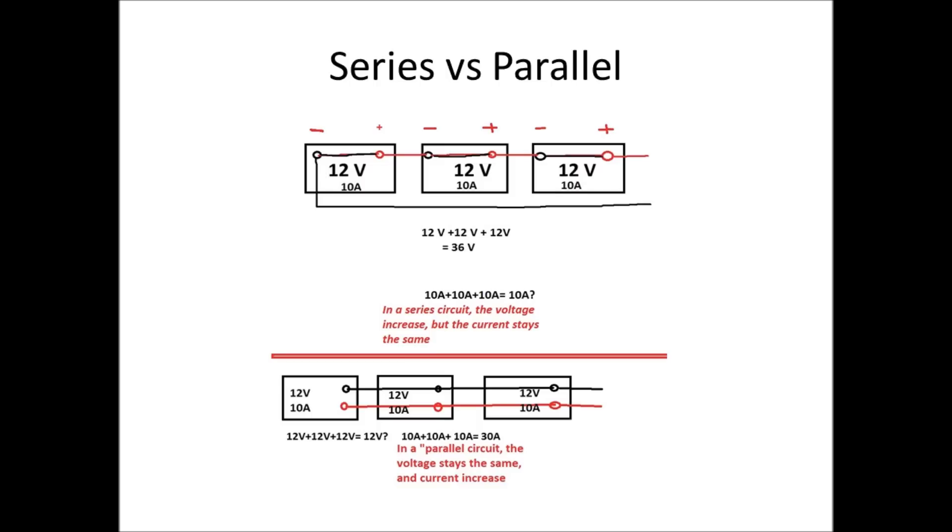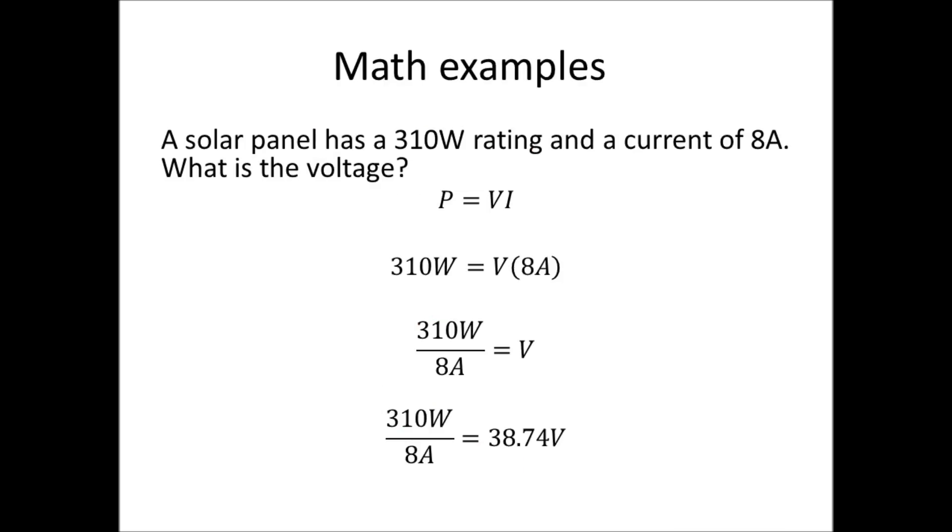Here's some simple math. A solar panel has a 310 watt rating and a current rating of 8 amps. What is the voltage? Here we go again with our algebra: P equals V times I. They're giving us the power in watts, which is 310, that equals V times 8 amps. We're going to divide 8 amps on each side. 310 watts divided by 8 amps equals the volts. 310 divided by 8 equals 38.75 volts.